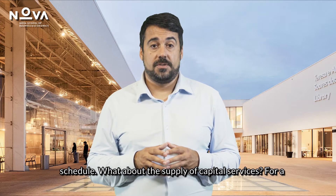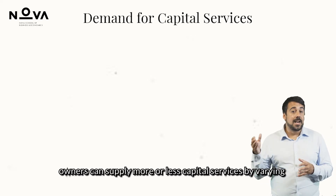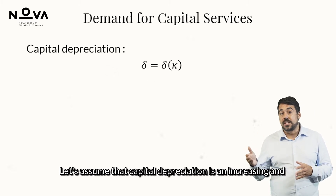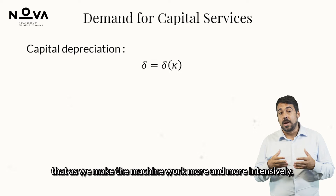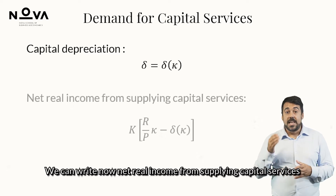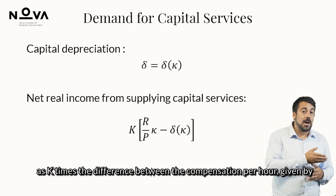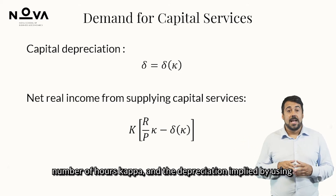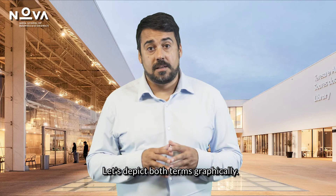We observe a vertical shift of the capital services demand schedule. What about the supply of capital services? For a given stock of capital K, owners can supply more or less capital services by varying Kappa, the capital utilization rate. Let's assume that capital depreciation is an increasing and convex function of capital utilization, reflecting the idea that as we make the machine work more and more intensively, the probability of it breaking increases more and more. We can write net real income from supplying capital services as K times the difference between the compensation per hour — given by the rental price R over P times the number of hours Kappa — and the depreciation implied by using the machine Kappa hours.